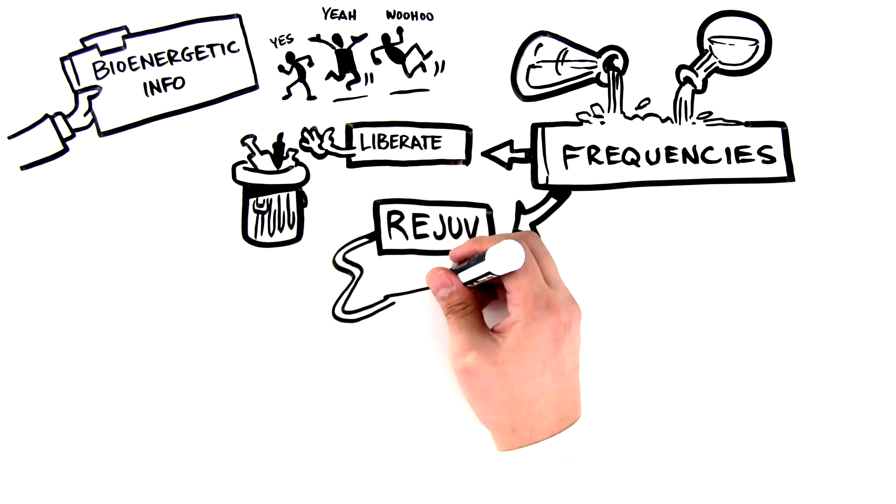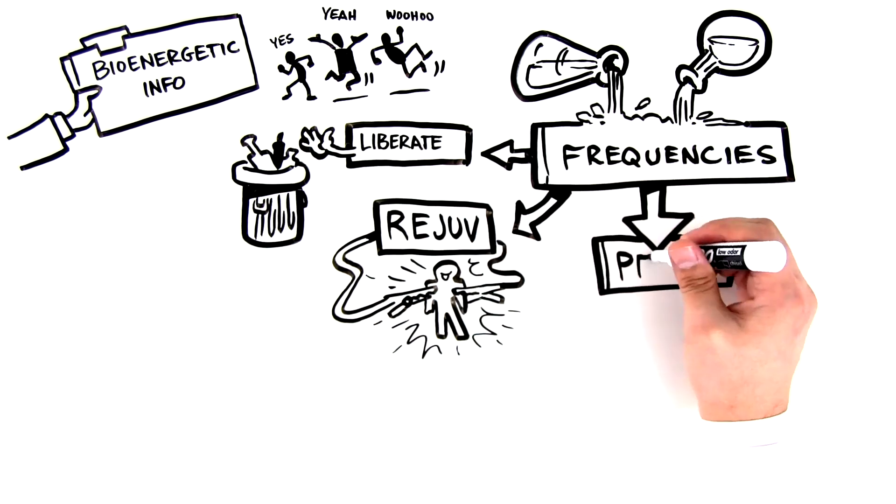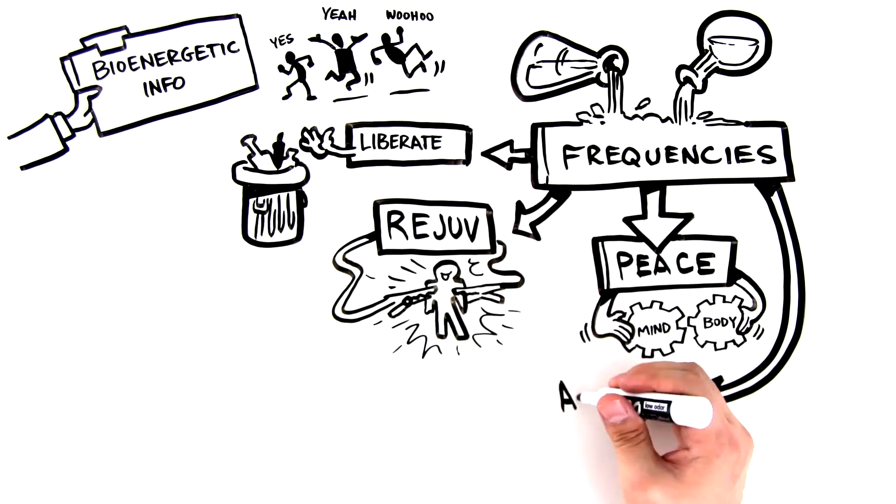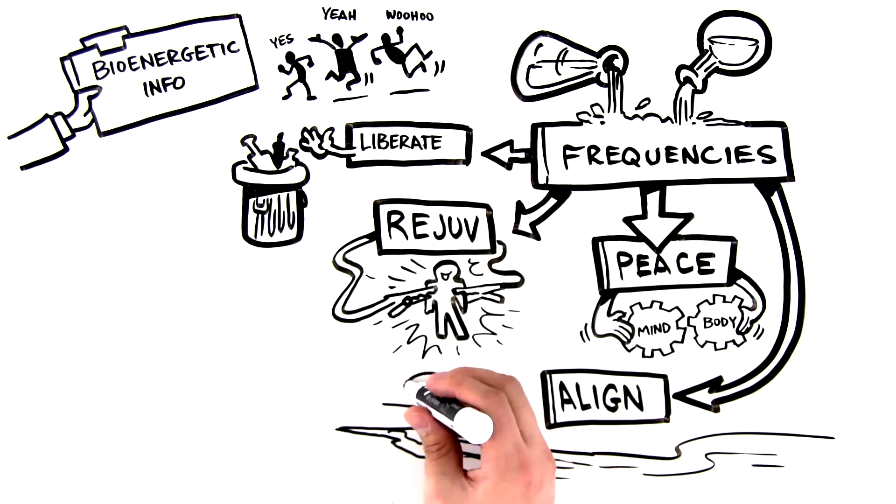Rejuve, for jumpstarting the body's natural healing process. Peace, to align the mind and body for a peaceful existence. And Align, for aligning the body with meridian energy flow.